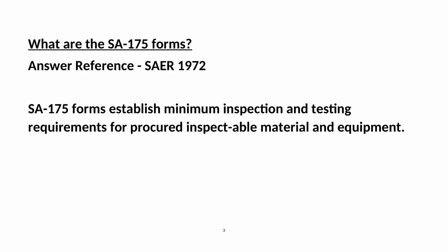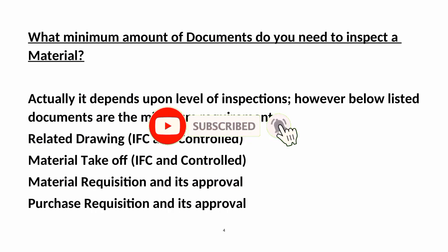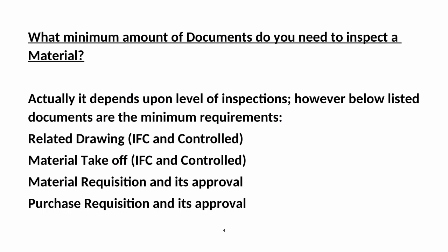What are the SAR 175 Forms? Answer Reference: SIR 1972. SAR 175 Forms establish minimum inspection and testing requirements for procured inspectable material and equipment. What is the minimum amount of documents needed to inspect a material? It depends upon the level of inspection; however, the below listed documents are the minimum requirements.